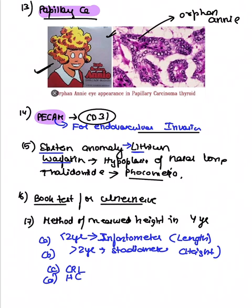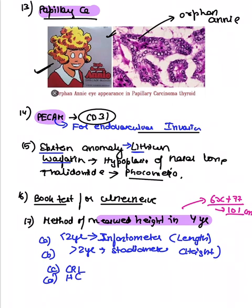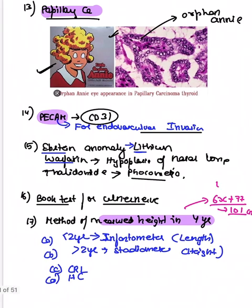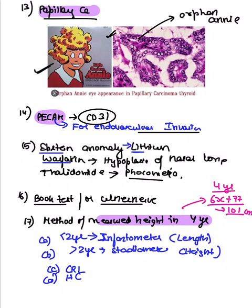A question asked how to measure height in a four-year-old. The formula for height is 6 times age plus 77, which gives 101 cm at four years. Birth length is 48-50 cm and doubles at four years. Options included infantometer, stadiometer, crown-rump length, and head circumference. Infantometer is used for children under two years (measures length); stadiometer is used for children over two years (measures height).